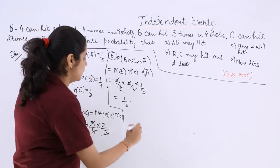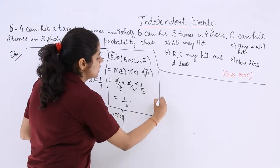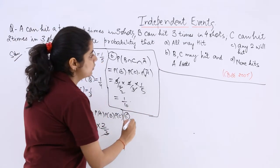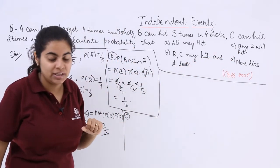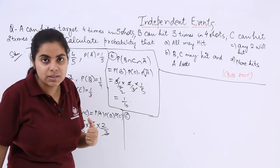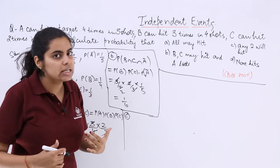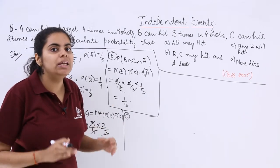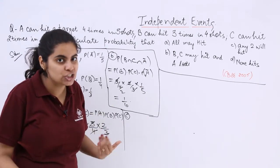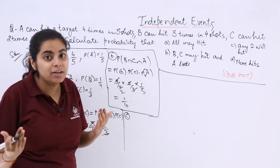Now the third part. The third part is probability of any two will hit. Any two will hit means what? A and B can hit, C will not. B and C can hit, A will not. Or C and A will hit, B will not.